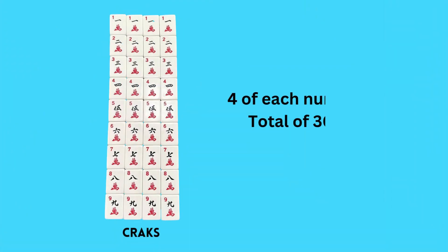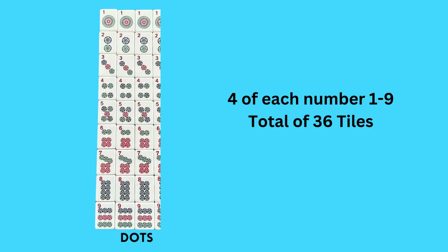In American Mahjong, we have three suits: the bams, the dots, and the cracks — very much like suits in card games. The first suit you see here are the cracks, and there are four of each tile numbered 1 through 9, totaling 36 tiles in all. Please note that the primary color on these crack tiles is red.